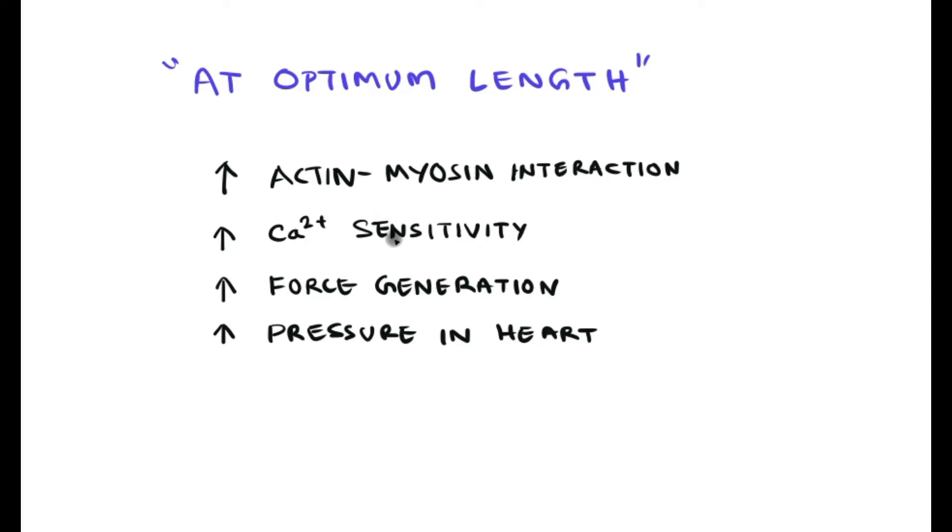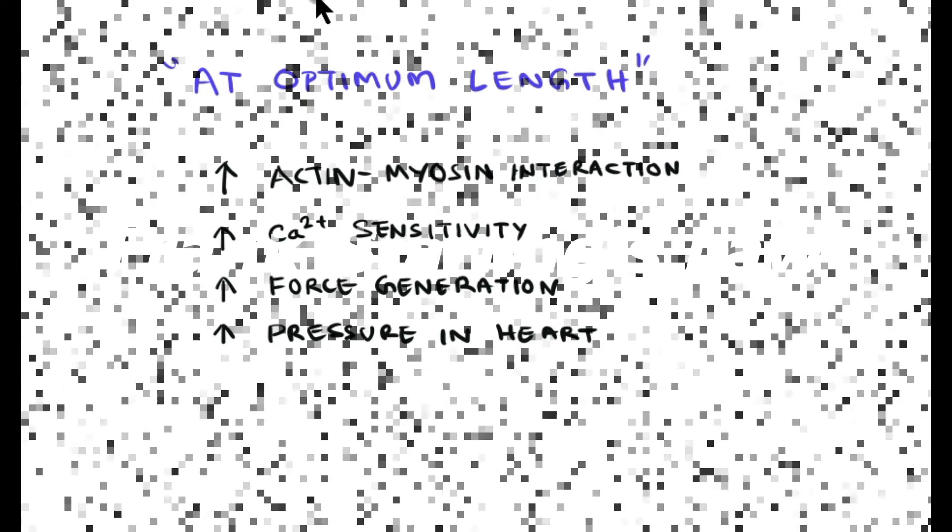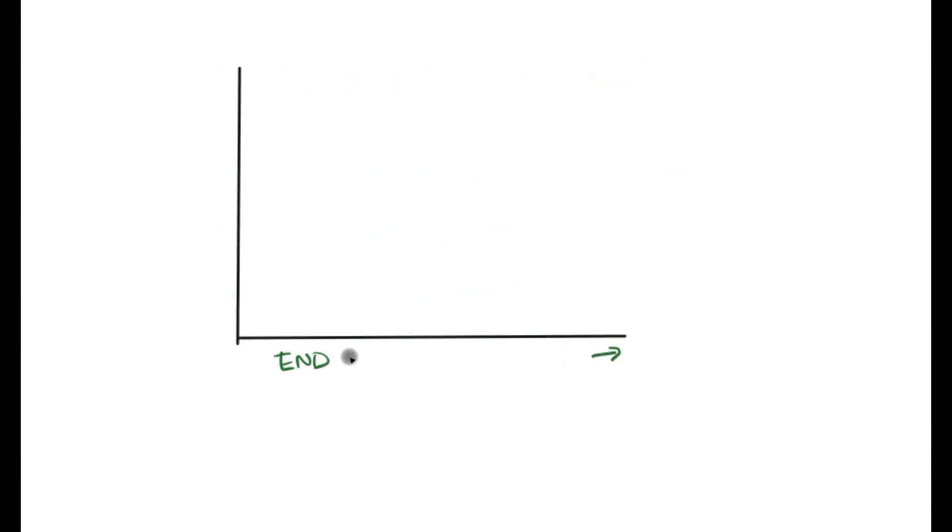And the force generation and thereby pressure generation is high in the cardiac muscle. That's how the end-diastolic volume increases the stroke volume or cardiac output in normal situations, in a normal physiological range at rest.